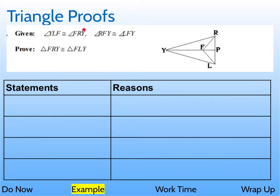In this proof, we're given that angle YLF is congruent to angle FRY, and angle RFY is congruent to angle LFY. We're trying to prove that triangle FRY is congruent to triangle FLY.